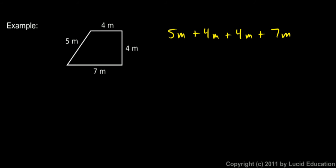And I can add all those together because they're all meters. And again, I find this easier to add in pieces. 5 and 4 is 9, and 7 and 4 is 11. And you might see that 9 and 11 add up to 20. So 20 meters is the answer.